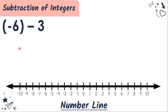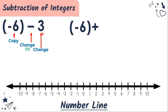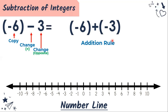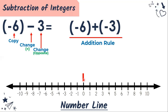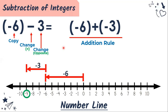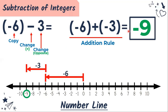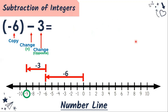Another example: negative six minus three. Copy the first number — negative six. Change the subtraction sign to addition sign — plus. Third, change our second number to its opposite sign: this one is positive, therefore we have negative three. That means negative six minus three equals negative six plus negative three. Our first number is negative, so we use a red arrow — six units to your left. Plus negative three: red arrow, three units to your left. We have negative nine. Negative six plus negative three equals negative nine, same as negative six minus three equals negative nine.